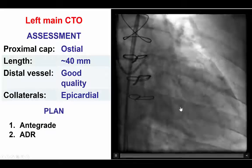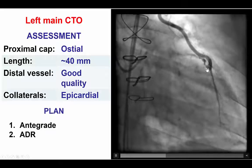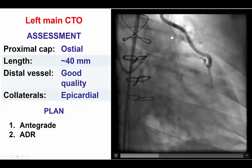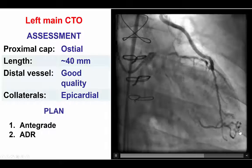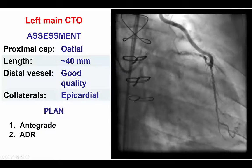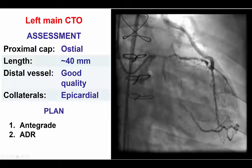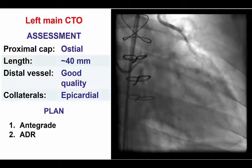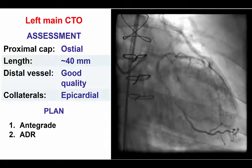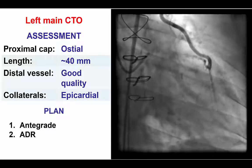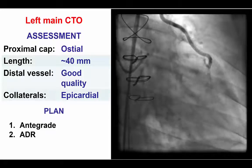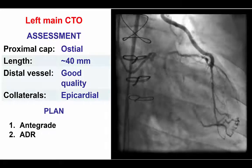The distal vessel was of good quality and was filling via epicardial collaterals from the LAD, which was also filling via the LIMA. This collateral appeared to be very tortuous and small and did not appear to be a good collateral for the retrograde approach. Therefore, our plan was to perform antegrade wire escalation and dissection re-entry without a retrograde option, which is not uncommon in some of these complex cases.